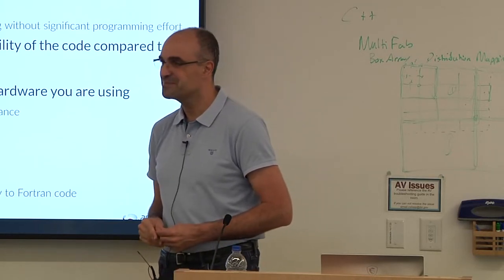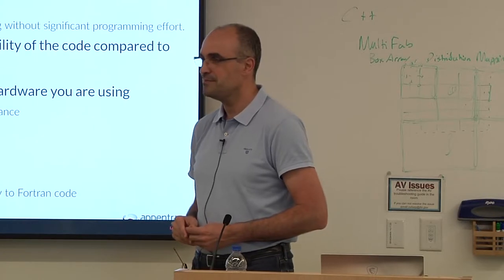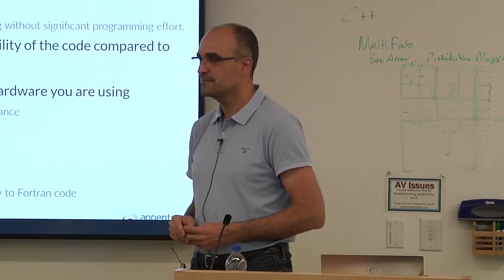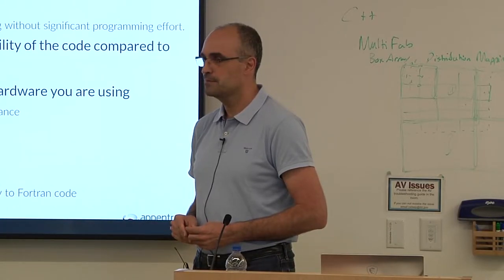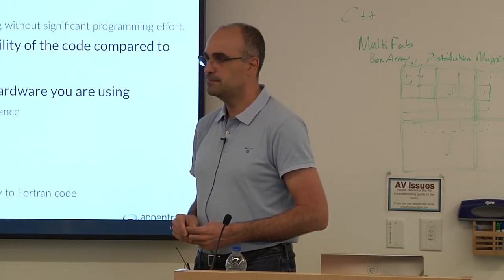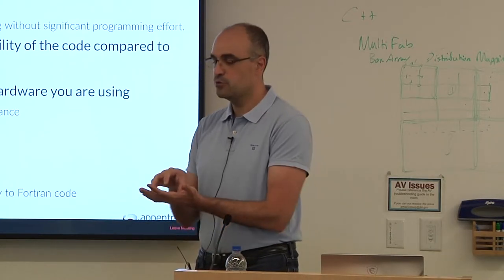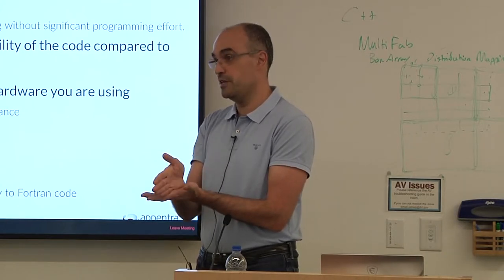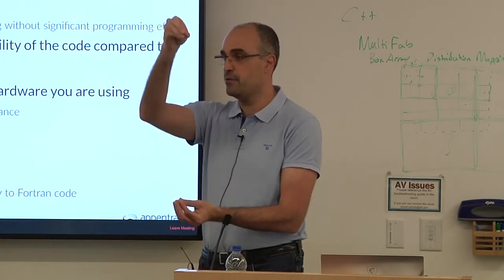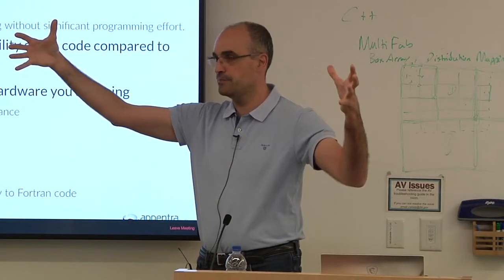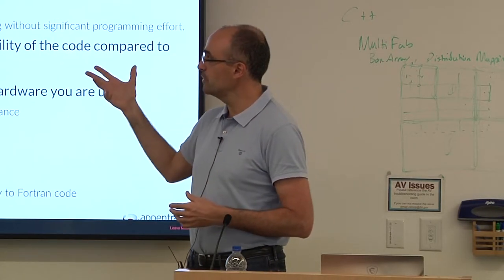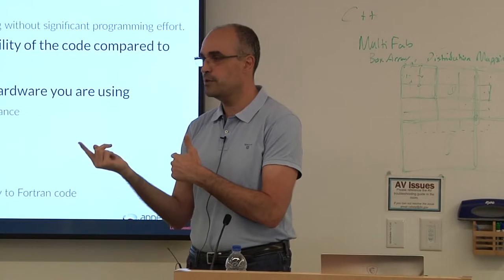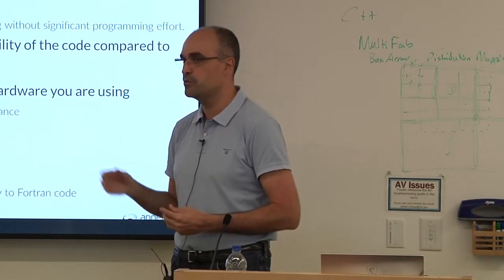Question from the audience: If my code is already parallelized with MPI, can your tool help? Yes — the tool helps you parallelize single-threaded code. Single-threaded code may be sequential serial code or an MPI rank within an MPI application. You can use our tool to make your MPI application hybrid, adding shared-memory or GPU parallelism to each MPI rank. That's another usage of the tool.